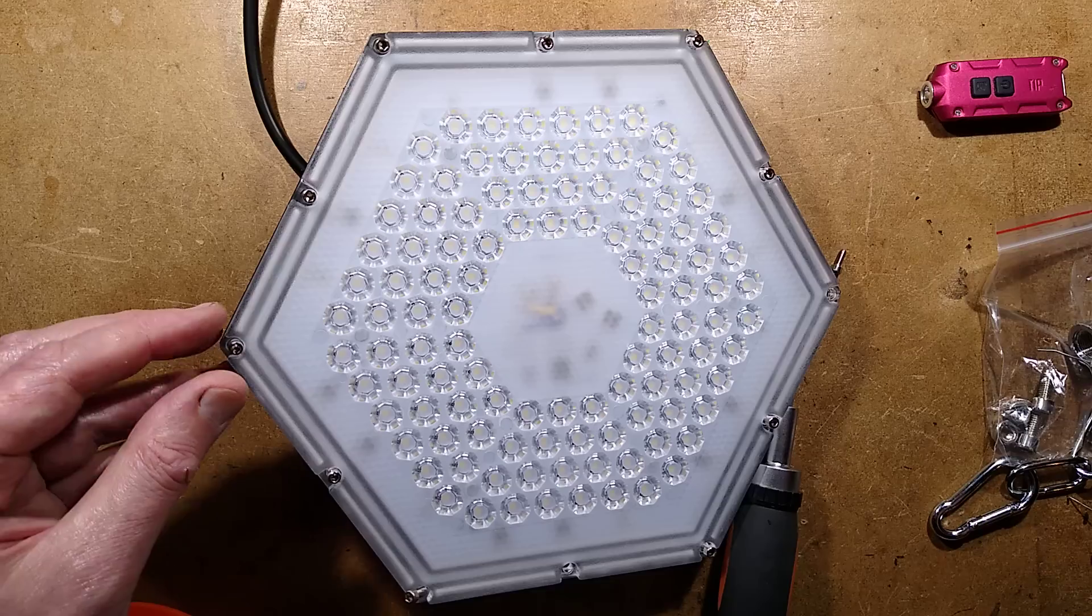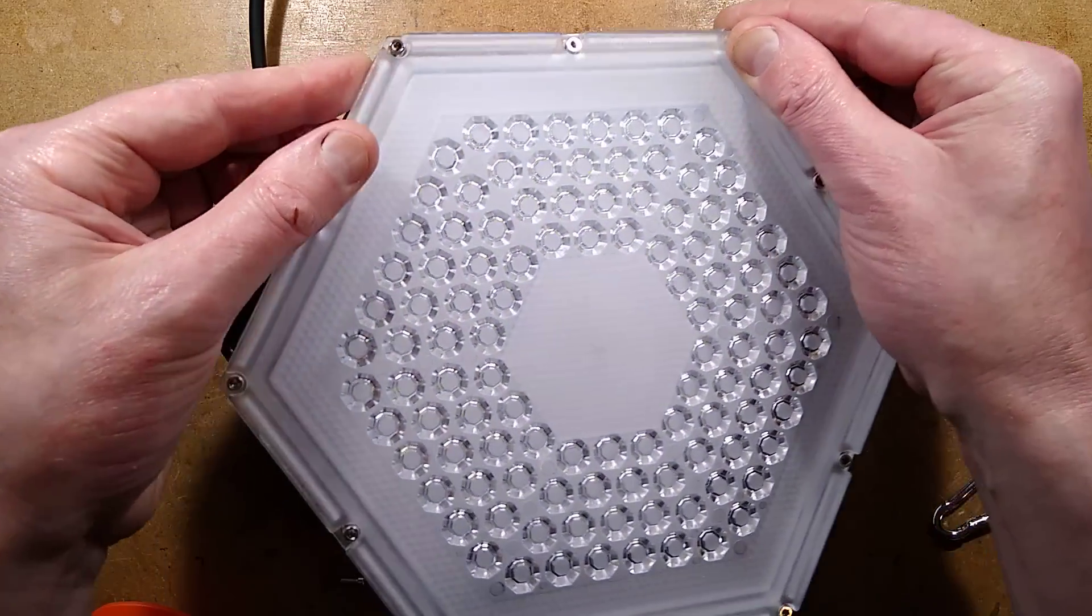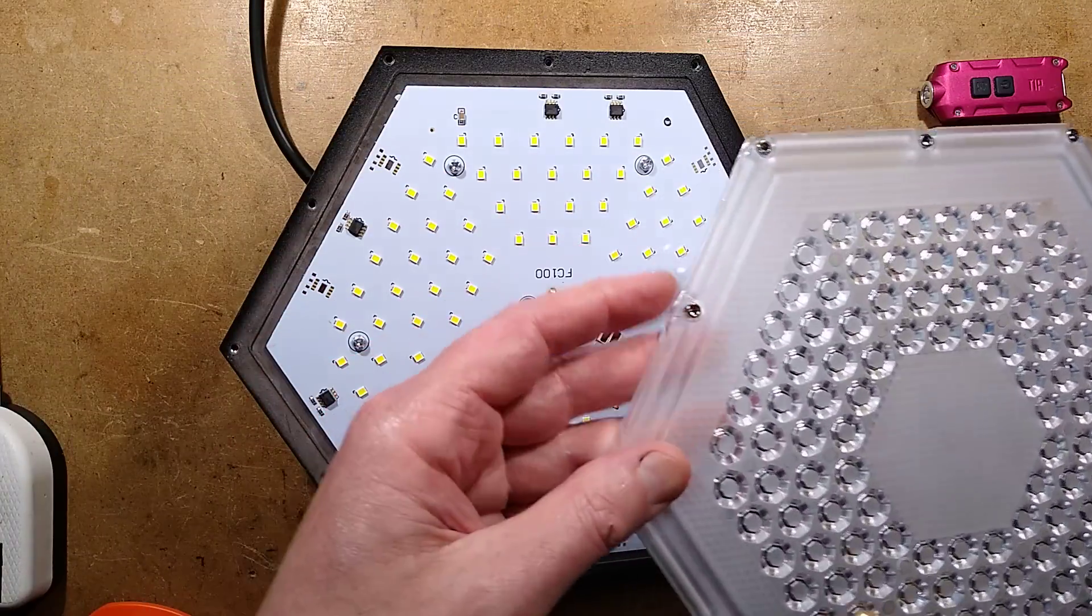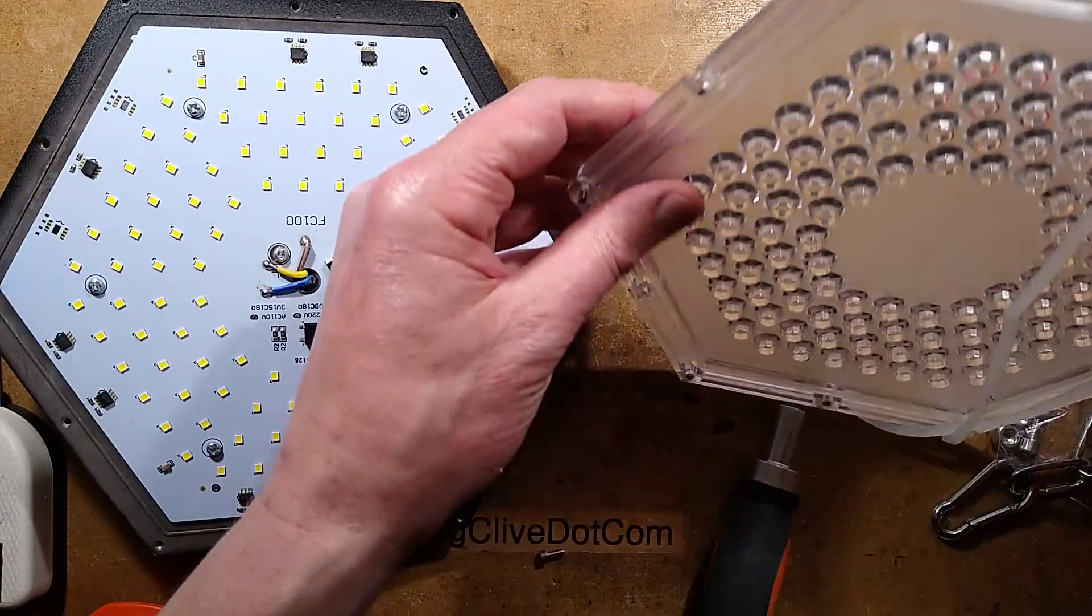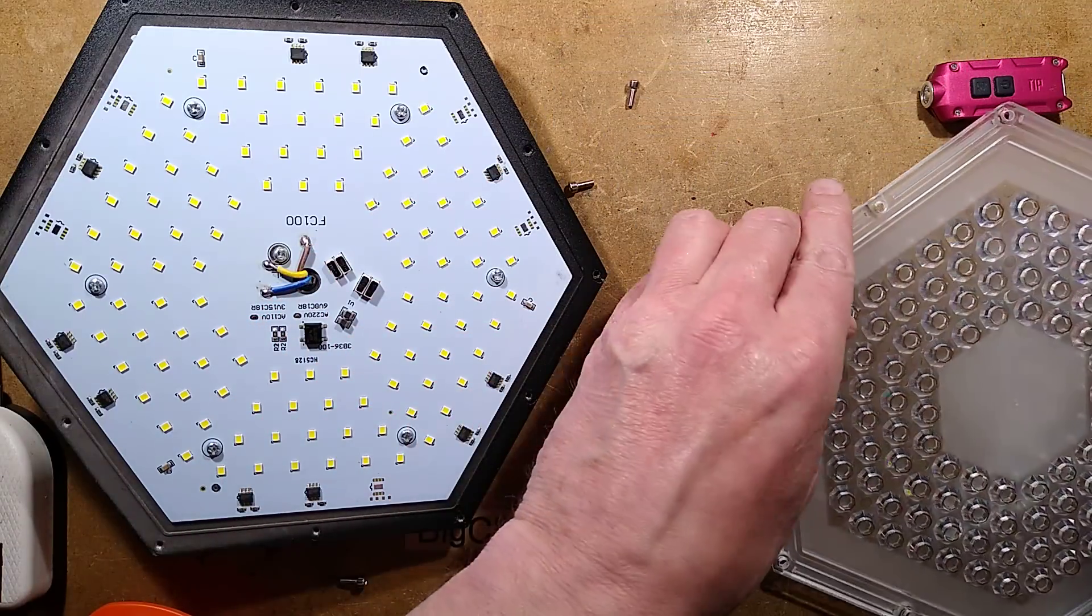That should be all the screws out. Let's see how easy this comes off. There's something kind of odd about this. There's all the screws, there's the seal, there is the circuit board. So what do we have here?